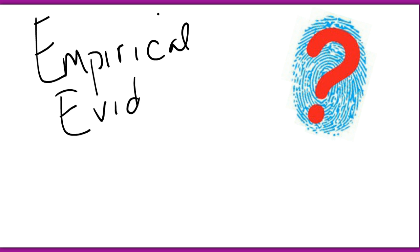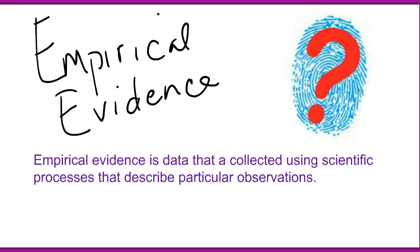Empirical evidence is what scientists are looking for. Empirical evidence is data that is collected using scientific processes that describe particular observations. For example, you may notice that your light isn't working. Is the problem with the light bulb? Is the problem at the light switch? Or is the problem somewhere else? What data do you collect using your scientific processes of observation, prediction, and inference to determine what evidence you have of why the light isn't on?